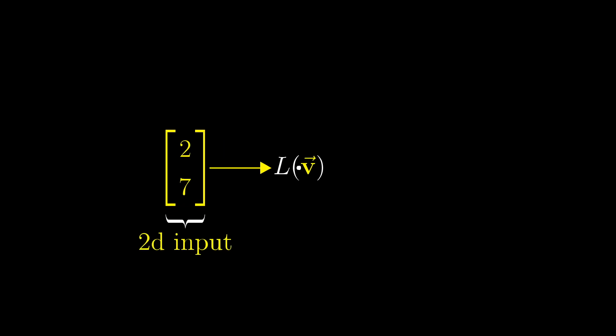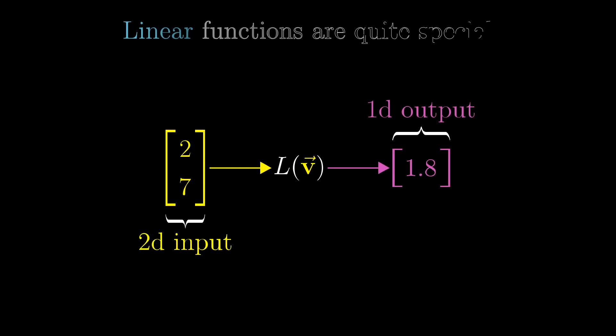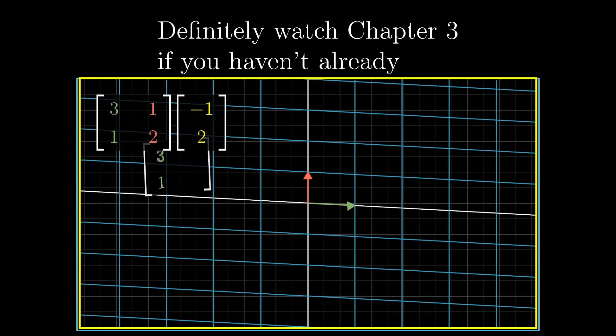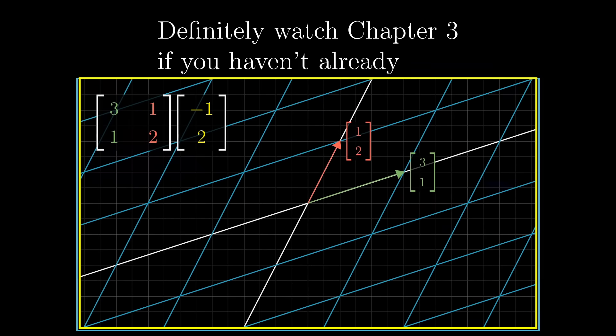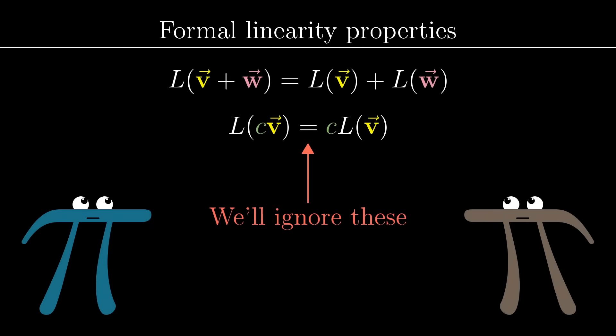These are functions that take in a 2D vector and spit out some number. But linear transformations are, of course, much more restricted than your run-of-the-mill function with a 2D input and a 1D output. As with transformations in higher dimensions, like the ones I talked about in chapter 3, there are some formal properties that make these functions linear. But I'm going to purposefully ignore those here so as to not distract from our end goal, and instead focus on a certain visual property that's equivalent to all the formal stuff.